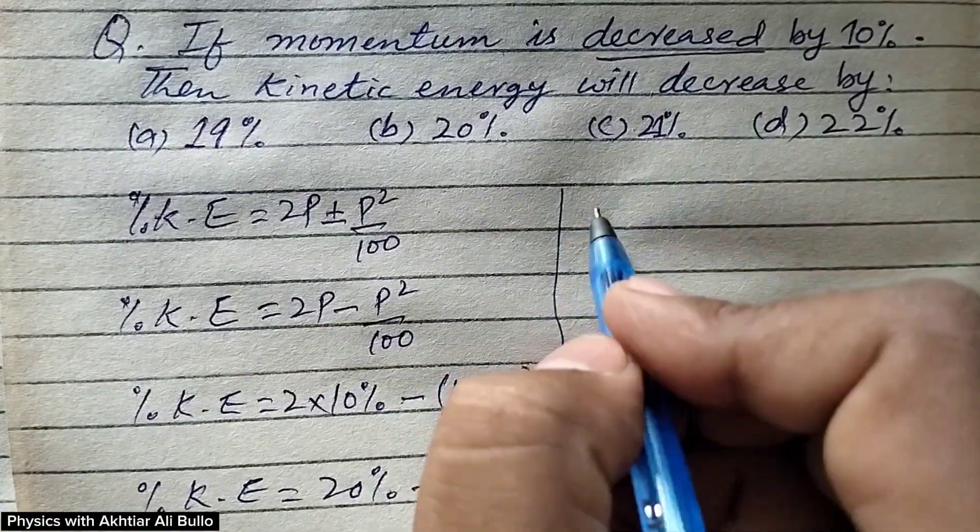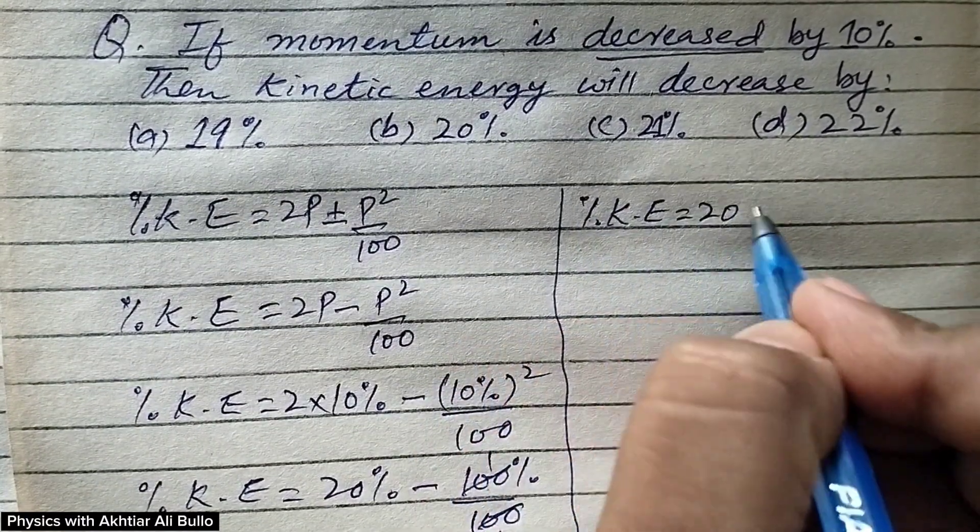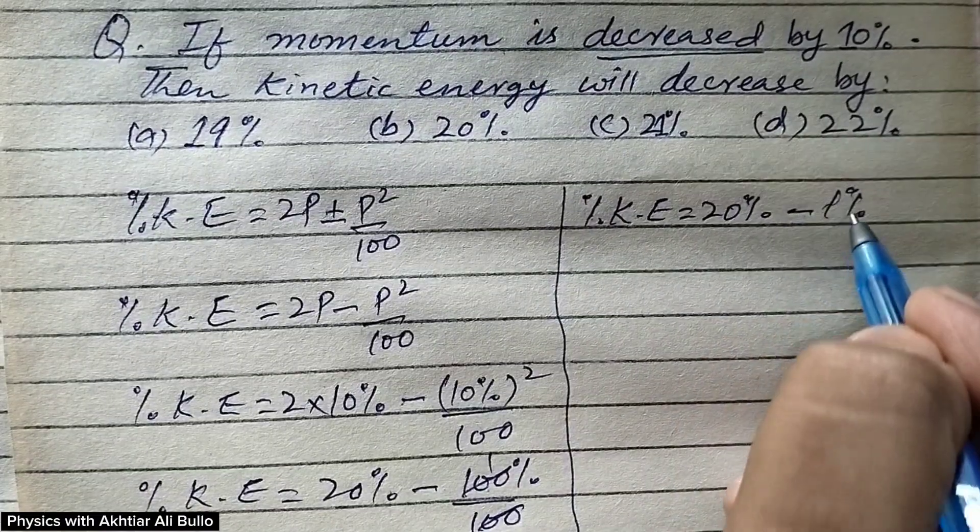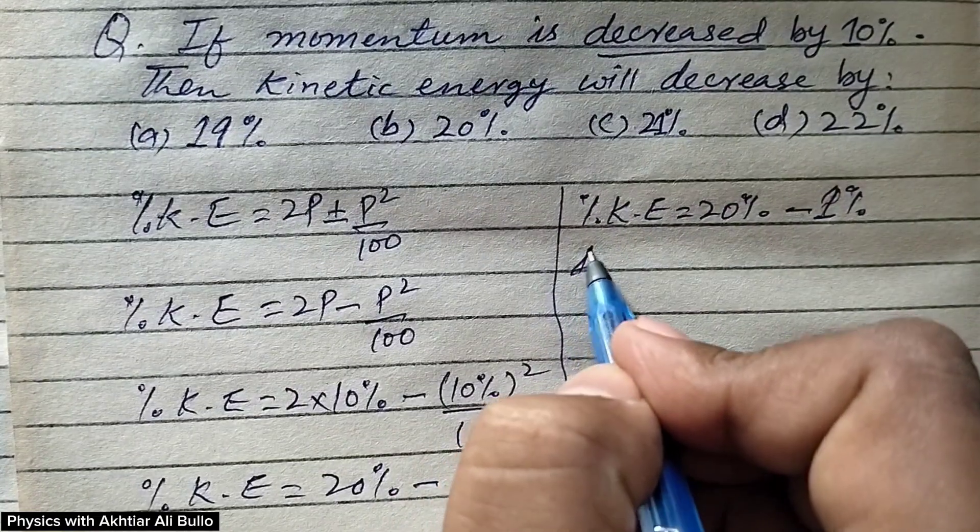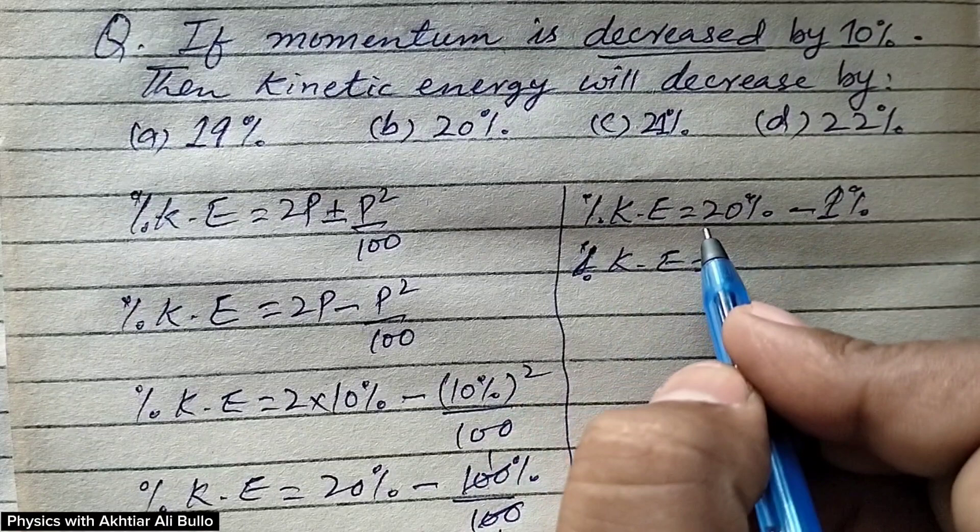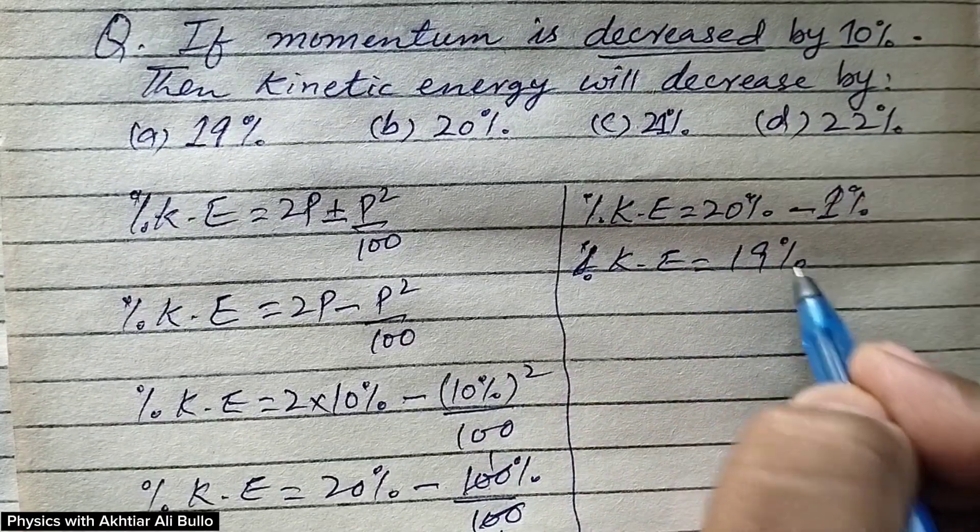So percentage decrease in kinetic energy will be equal to 20 percent minus 1 percent. So percentage decrease in kinetic energy will be equal to 20 percent minus 1 percent, which will be 19 percent.